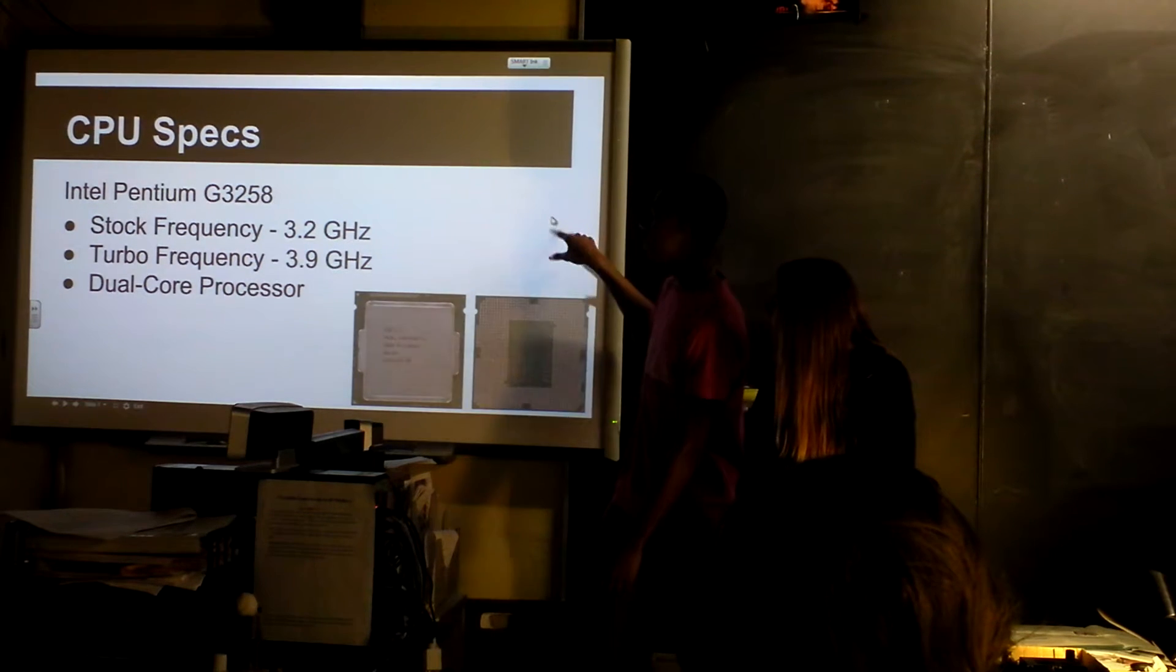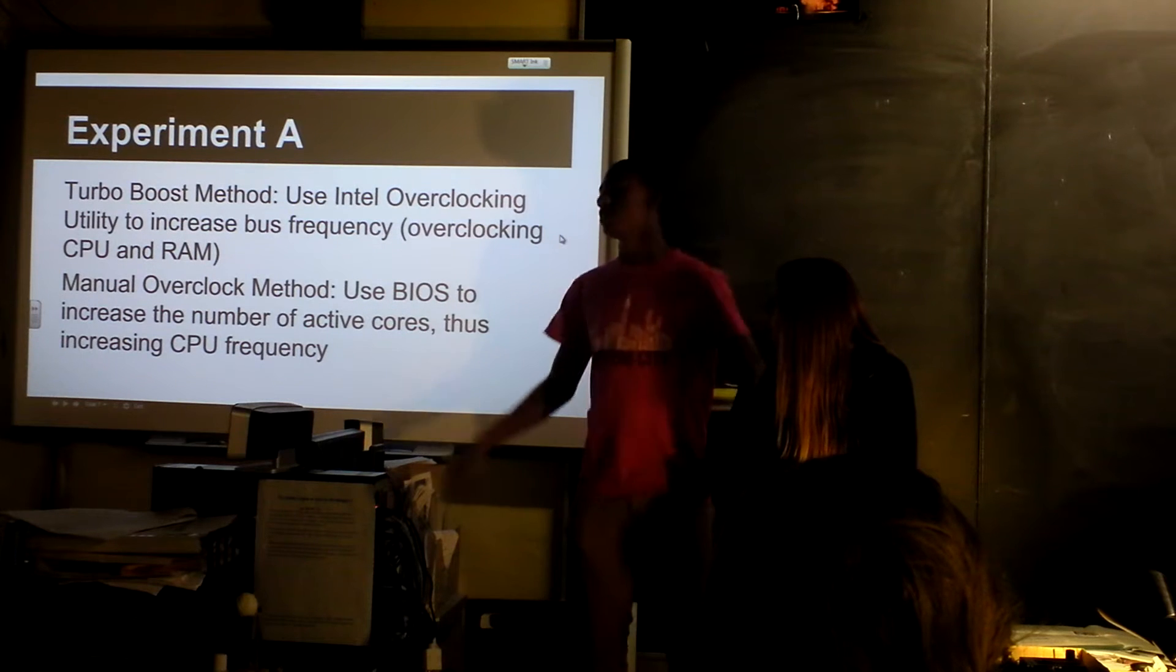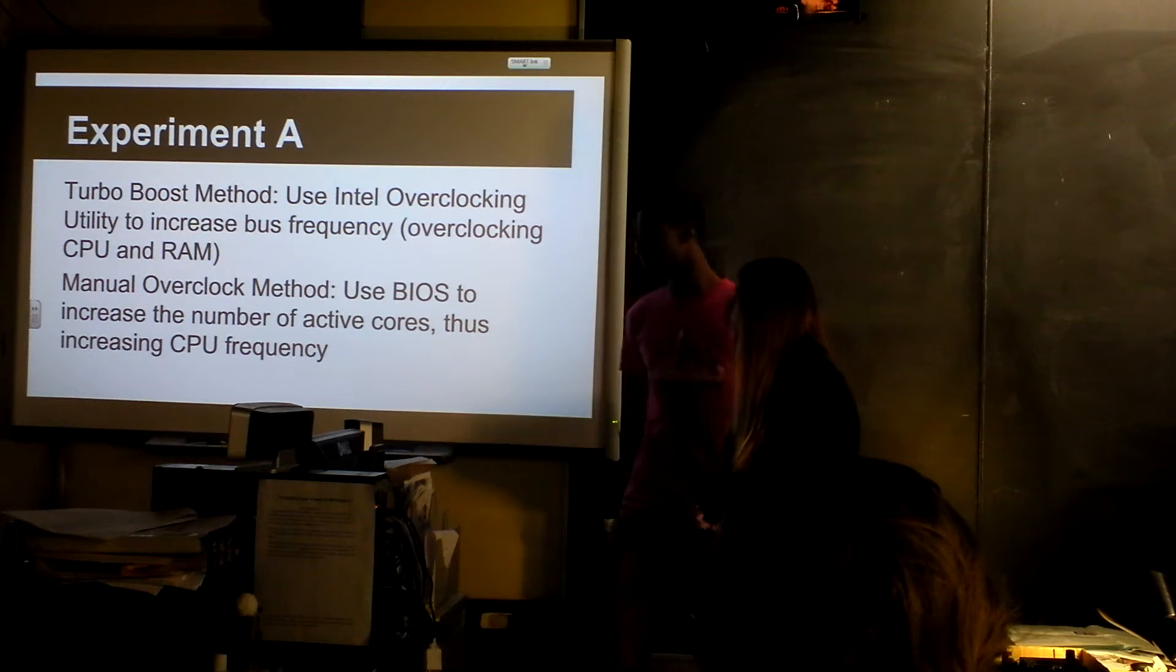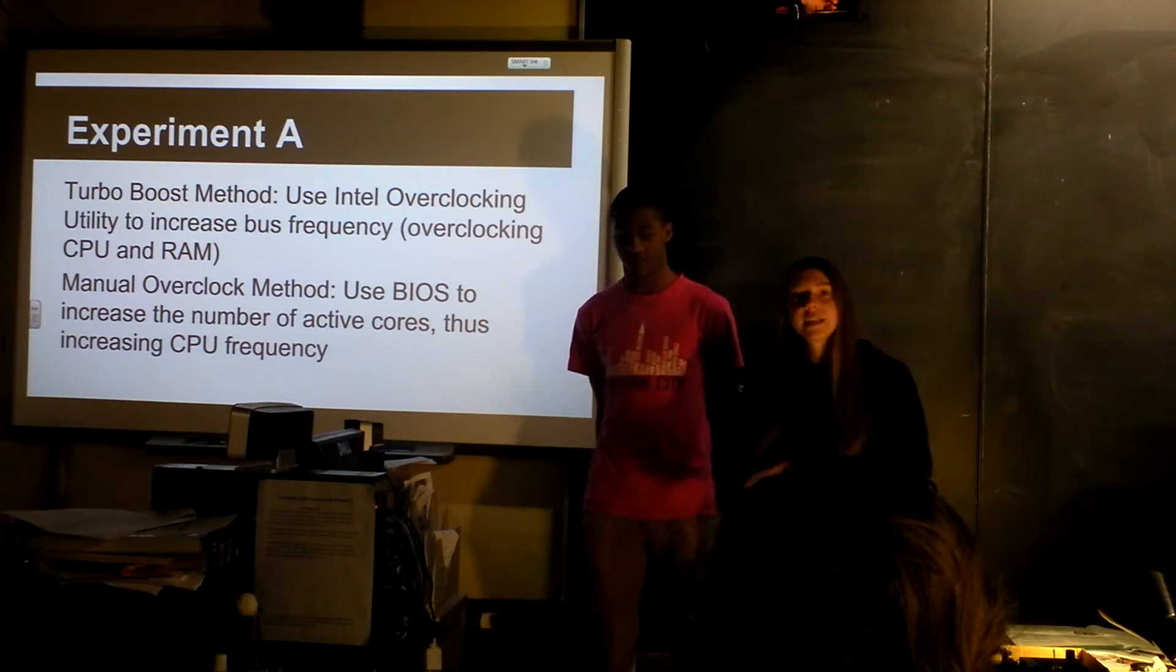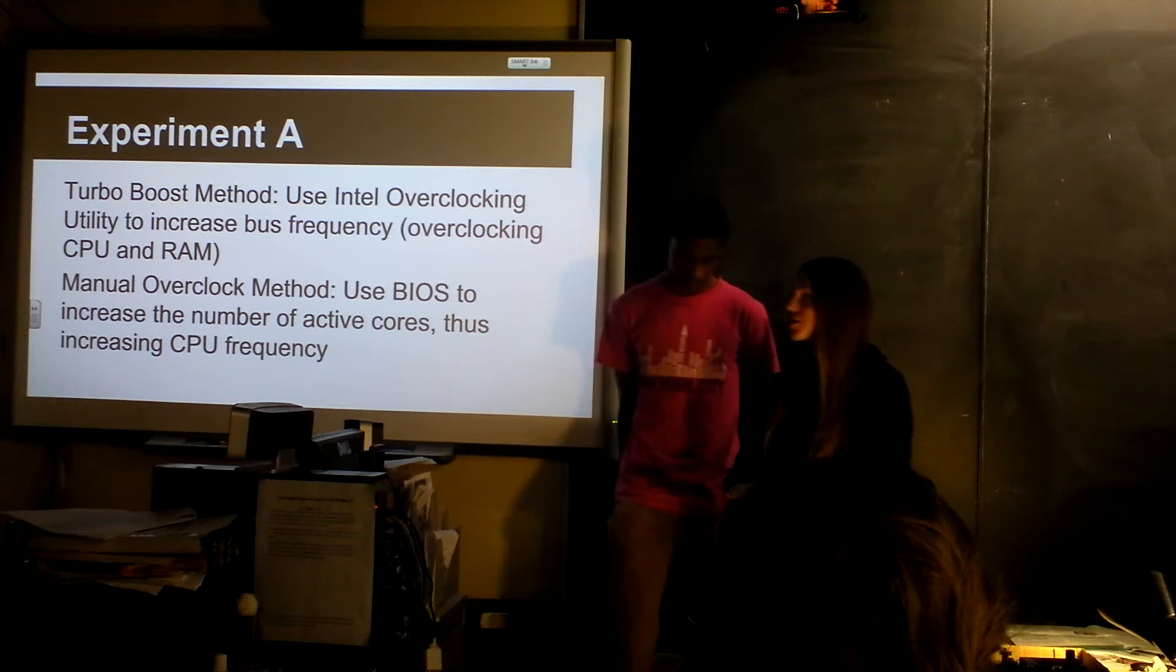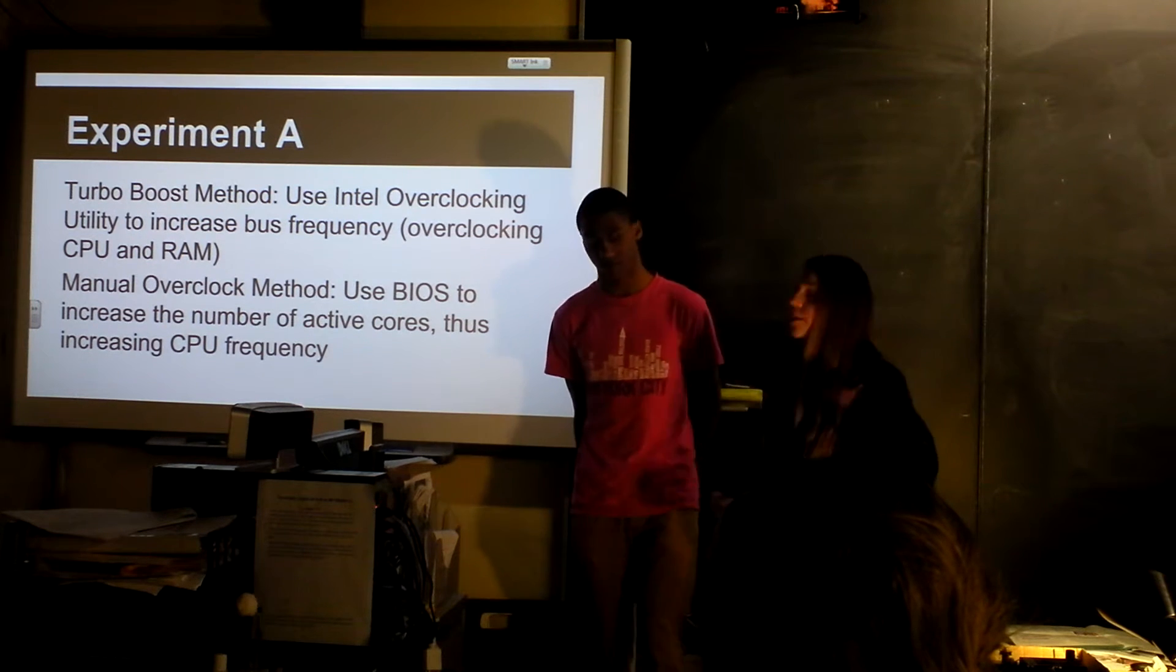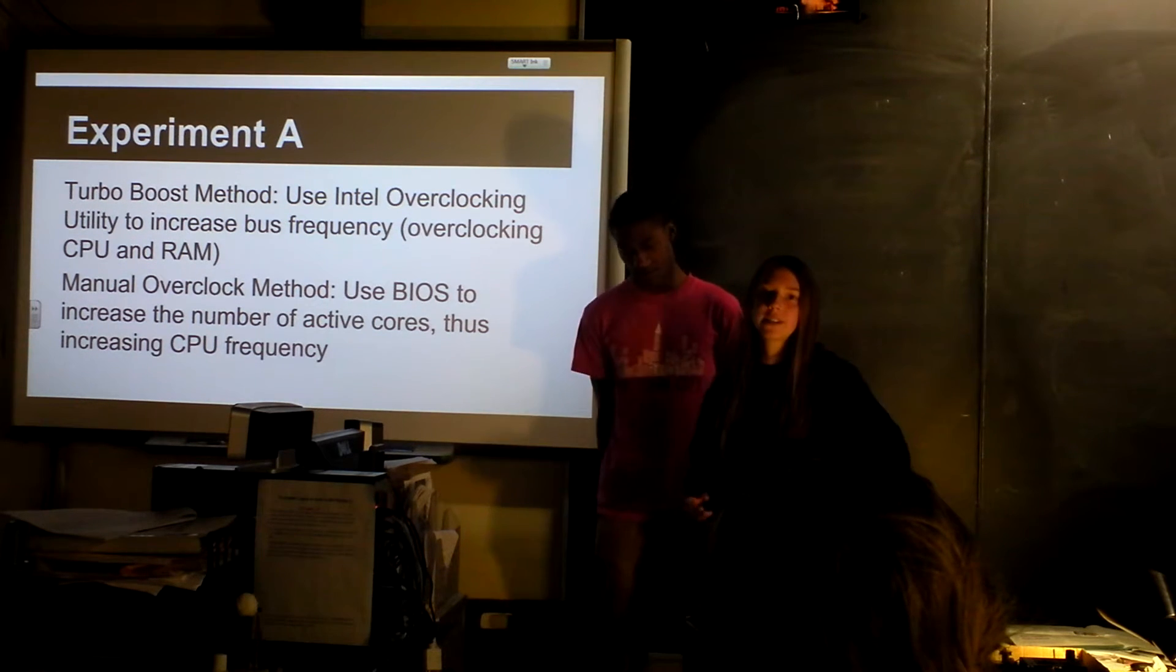And this is the processor, and that's the picture. So the first method was the turbo boost method, and that was just to increase the base frequency that the processor was using. And then with the manual overclock method, we were actually increasing the number of cores that were active in the processor.